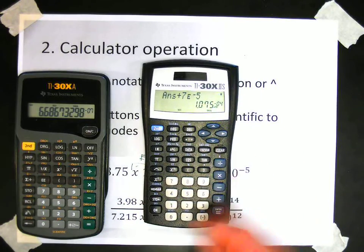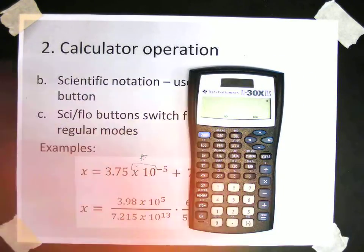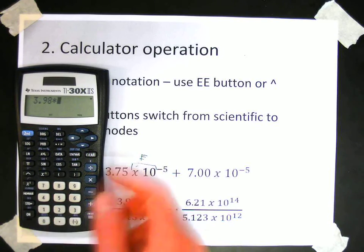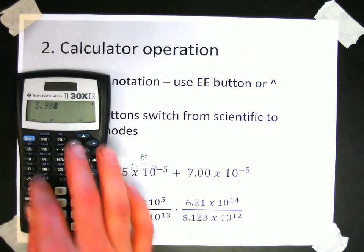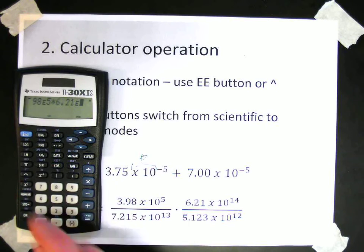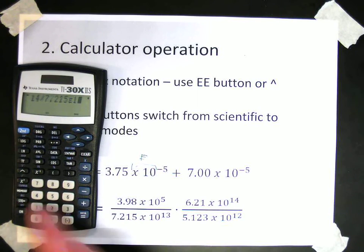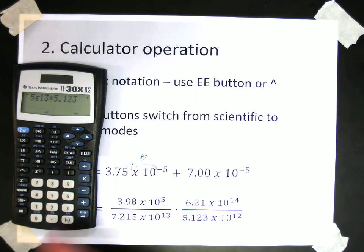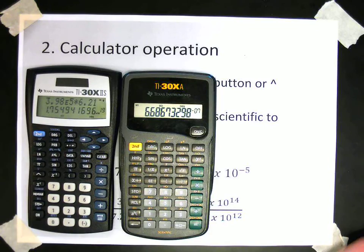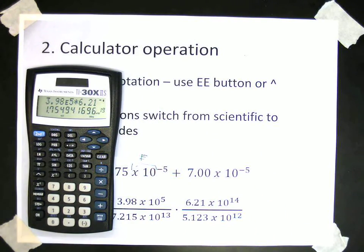So on this calculator, we would follow a very similar sequence. But let me show you something that can go wrong when you type this in. So if I did this the wrong way, it would look like this. So that's 3.98 times, oops, I'll try that again, 3.98 E to the 5th times 6.21 E to the 14th. Then I could go divide by 7.215, second E to the 13th, times 5.123, second E to the 12th, equals. And do you notice that I got different answers? Why might that be? Well, the second time I did it, this one is wrong. And the reason why...